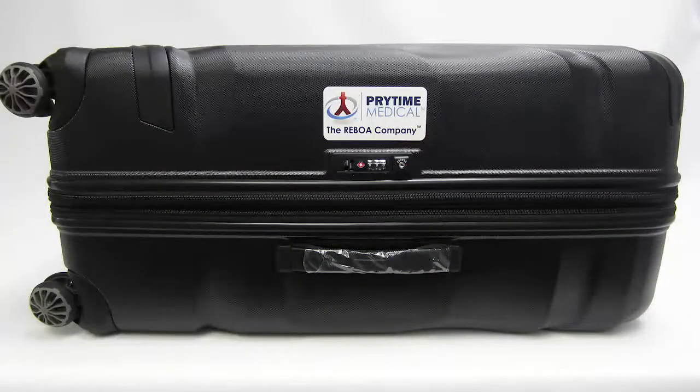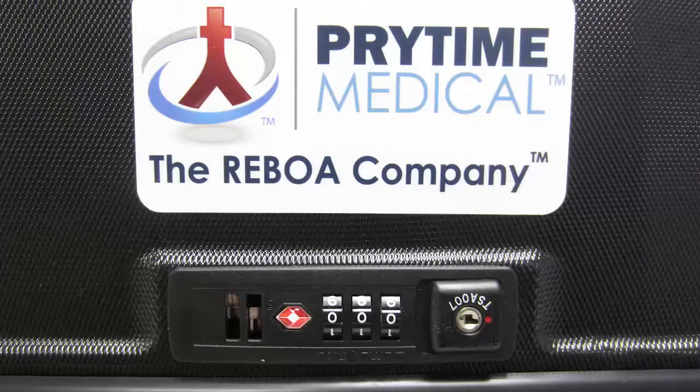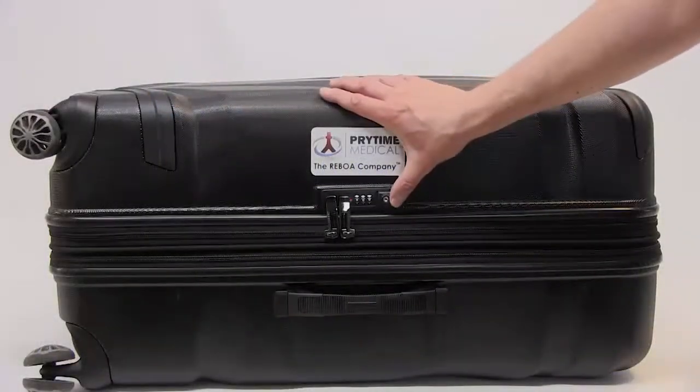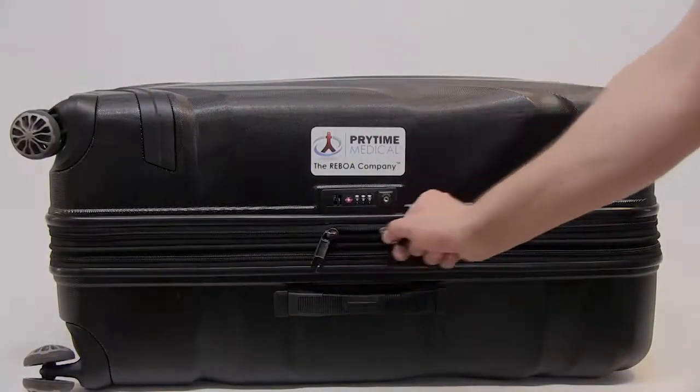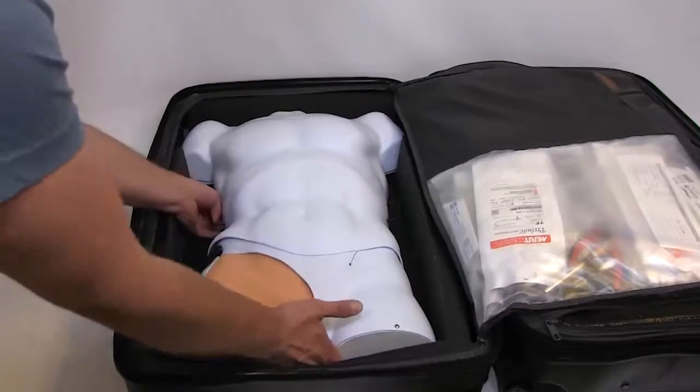Unlock the case containing the STAR by turning the combination to zero zero zero and then pressing the zipper release button in towards the combination dials. Remove the body model from the case.